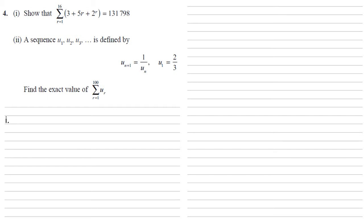We want to show that the sum from r equals 1 to 16 of 3 plus 5r plus 2 to the power of r is equal to 131,798. If we're trying to sum an expression with separate terms in it, we can split it up into the sums of those terms added separately.